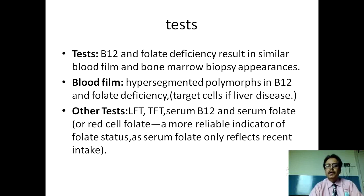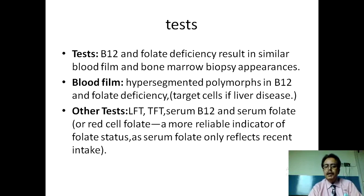Investigations: B12 and folate deficiency result in similar blood film and bone marrow biopsy appearances. In the blood film, there will be hypersegmentation of polymorphs in B12 and folate deficiency, and target cells are found in liver disorders. Other investigations include LFTs, thyroid function tests, serum B12 and folate levels. Red cell folate is a more reliable indicator of folate status, as serum folate may reflect recent intake.